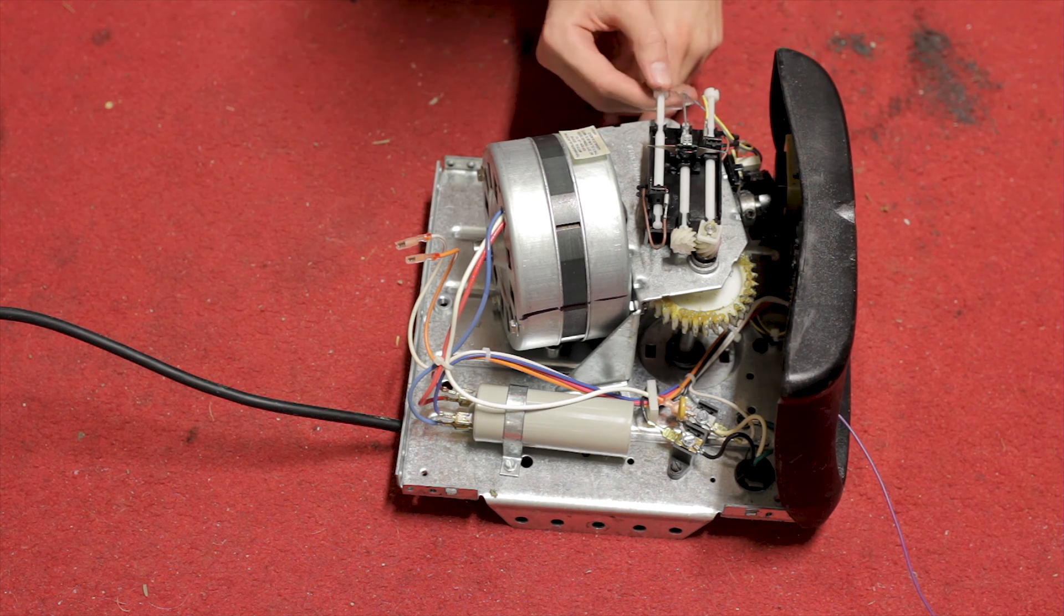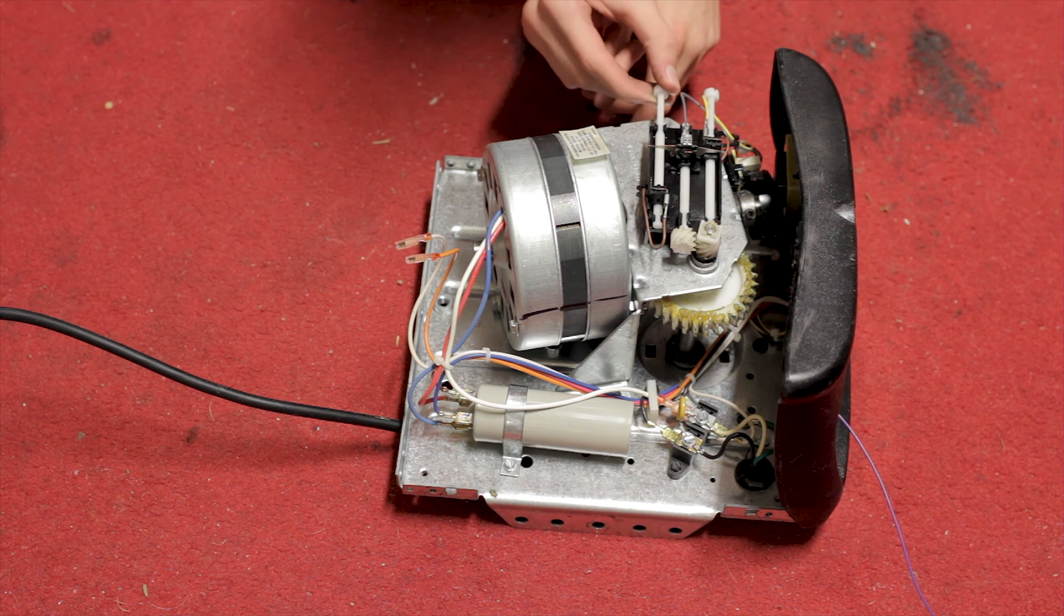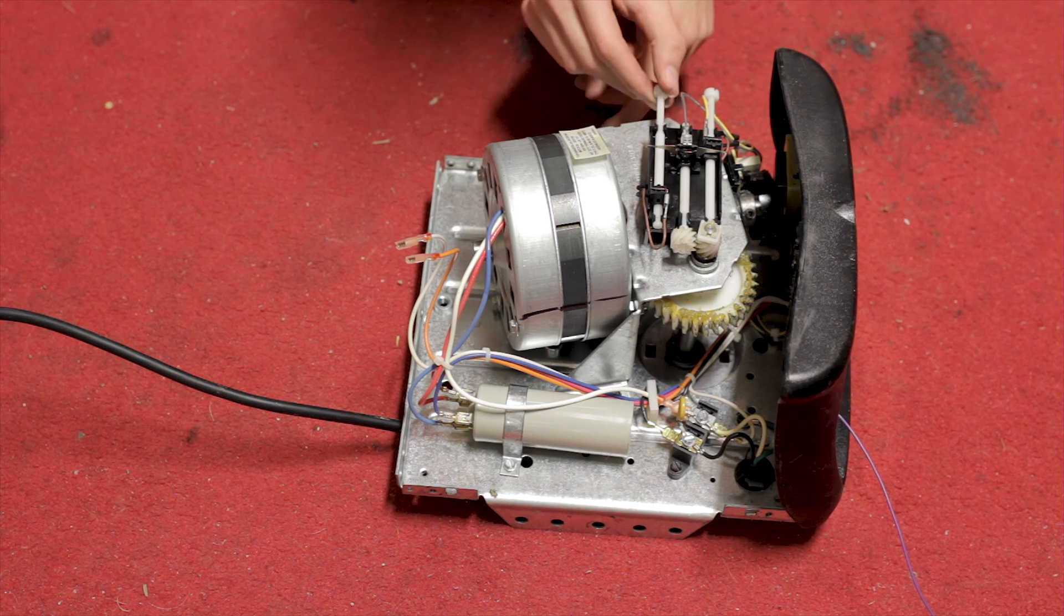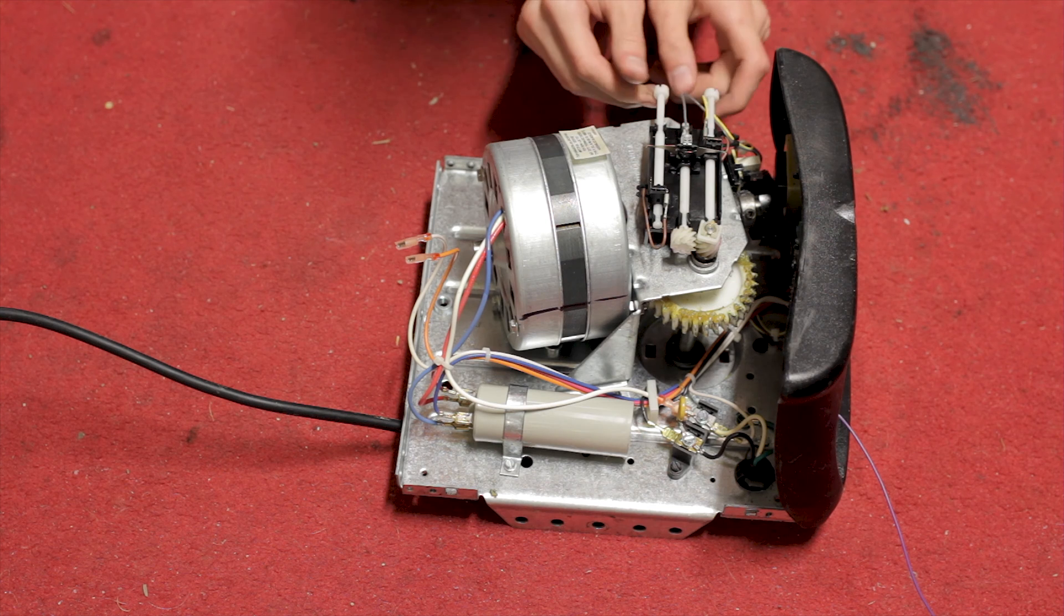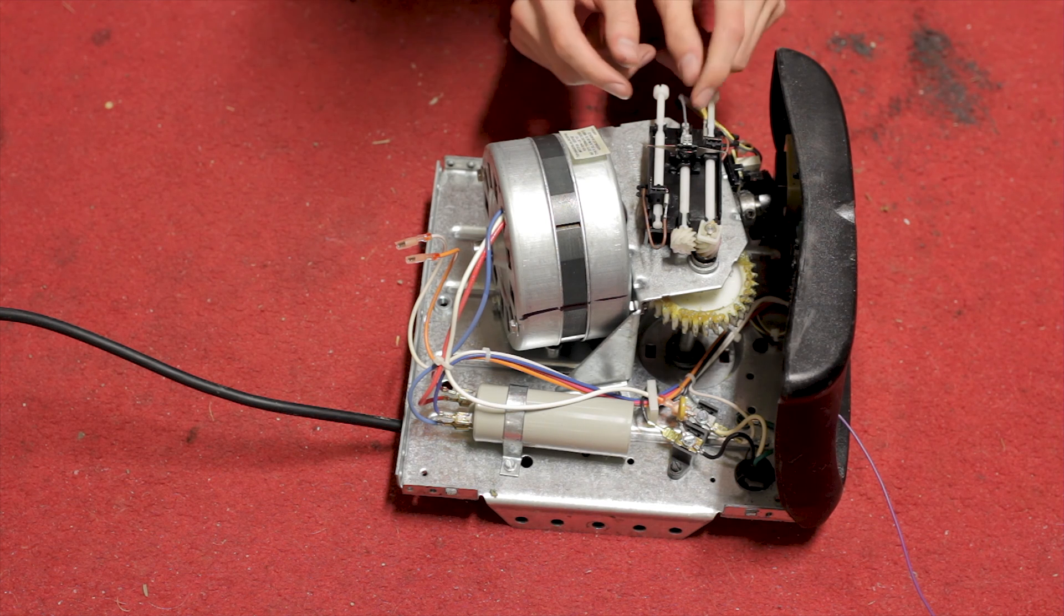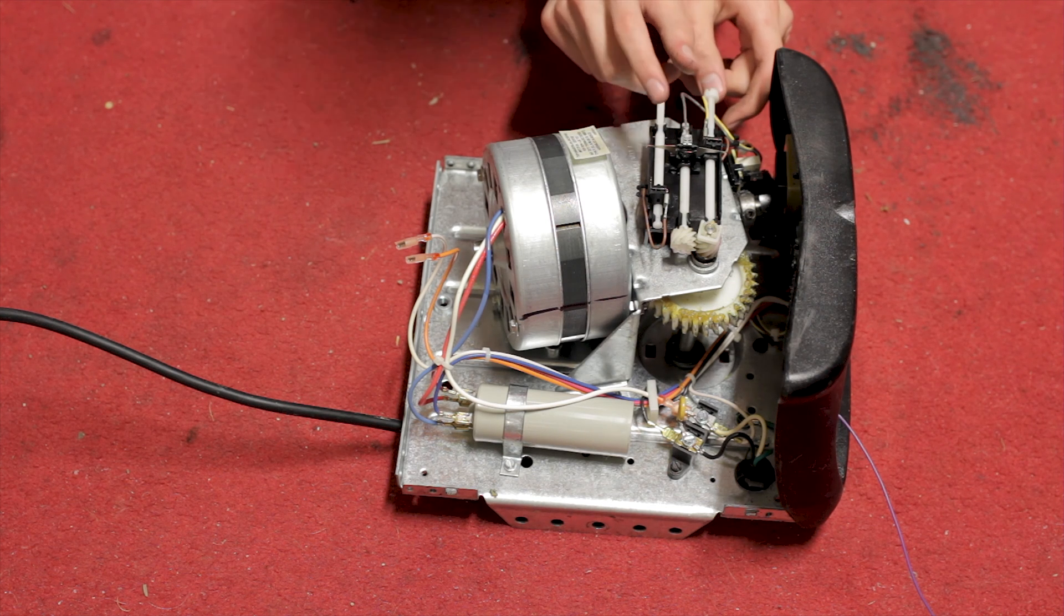Next thing we notice is what these knobs do on the side. These aren't electric at all. There's no microcontroller controlling these knobs. All these knobs do is they're connected to limit switches and when it moves, it moves this up and down.